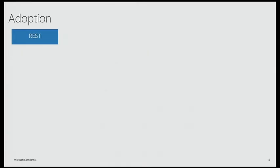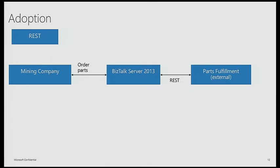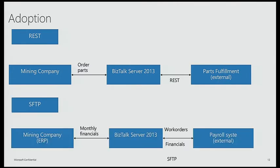Another example is a mining company that uses REST semantics to order parts — vendors send messages later once orders are fulfilled. Using BizTalk Server 2013 REST support, they built a solution without custom code and message inspector implementations. The same company also uses SFTP. New features like REST, SFTP, cloud enablement, and Service Bus are useful to many customers because they no longer need to build these things explicitly out of the box.